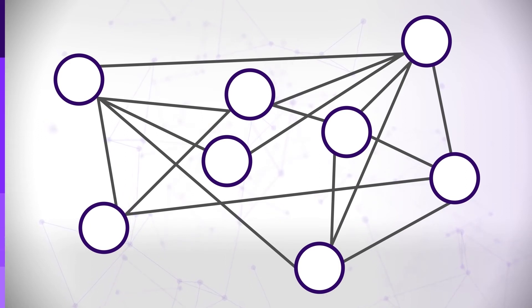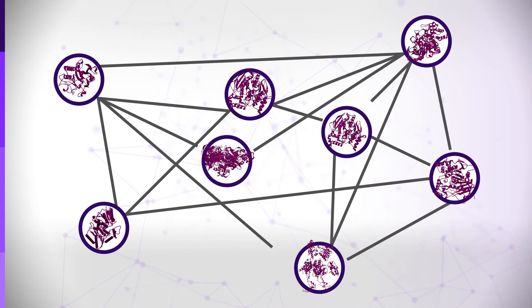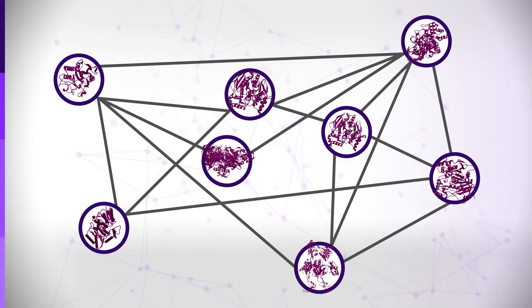We'll see an example in a minute. Alternatively, in another type of network, each node may represent a protein and each edge may represent a physical interaction between two proteins. Such a network will show us how information flows between proteins in a biological system.